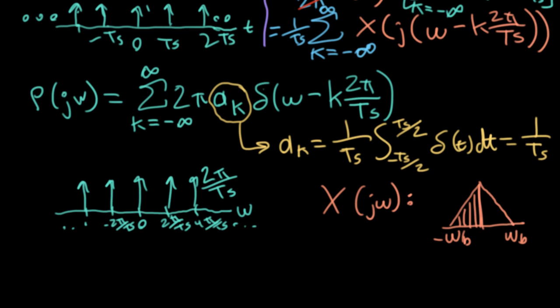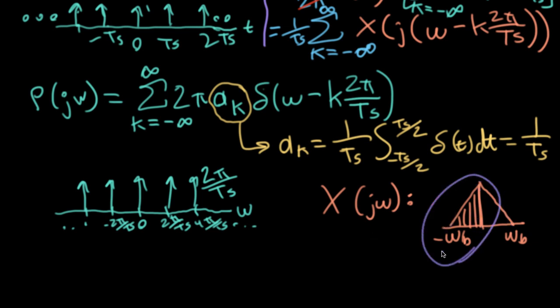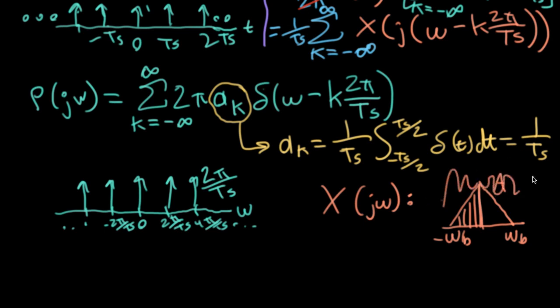We're assuming that little x of t is real, so we have conjugate symmetry, which I'm indicating with a hash mark. In a future lecture we'll see consequences of allowing complex-valued signals. Let's give this a height A just to have something to track. It could be doing all sorts of things — it's just nice to have a number.